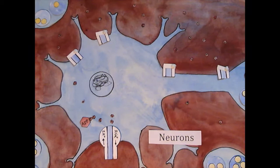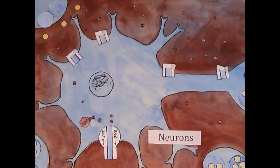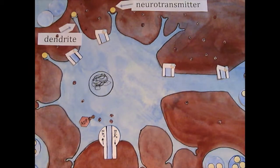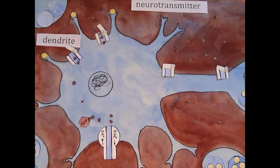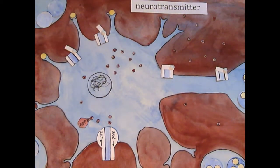The dendrite of the neuron receives a chemical signal called a neurotransmitter. When the dendrite receives the neurotransmitter, it causes gated channels to open.